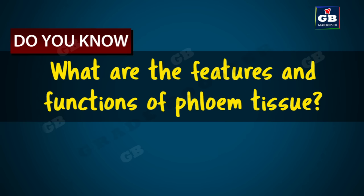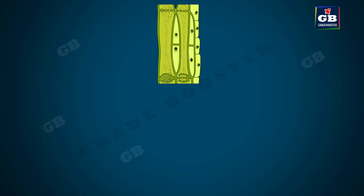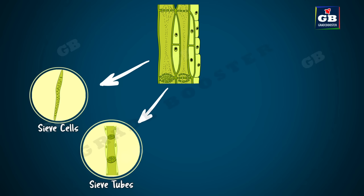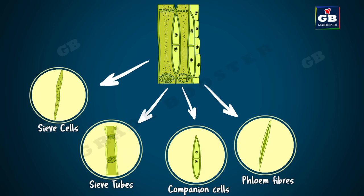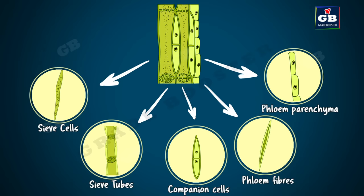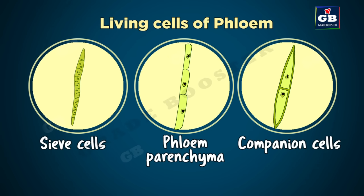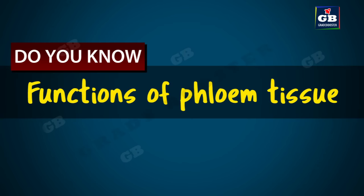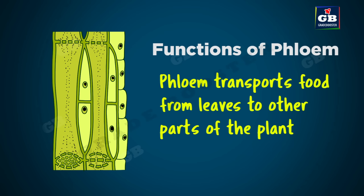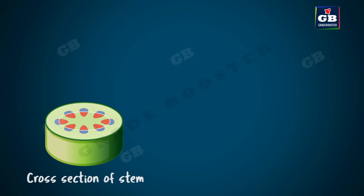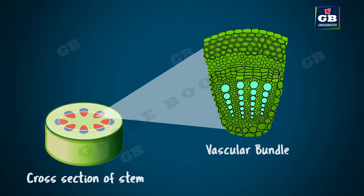Phloem is made up of five types of cells: sieve cells, sieve tubes, companion cells, phloem fibers, and phloem parenchyma. Sieve tubes are tubular cells with perforated cell walls. Phloem fibers are dead cells; all remaining phloem cells are living cells. Phloem transports food from leaves to other parts of the plant. Xylem and phloem join together to form a vascular bundle and are called the conducting tissues of the plant.